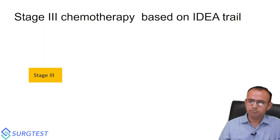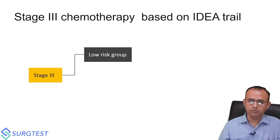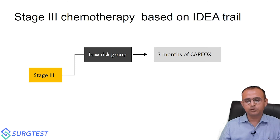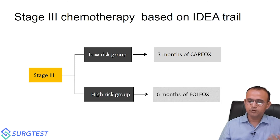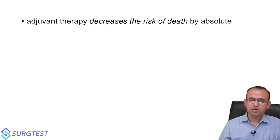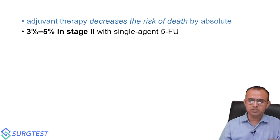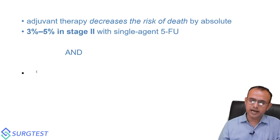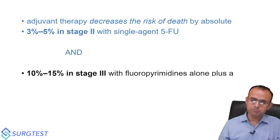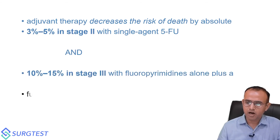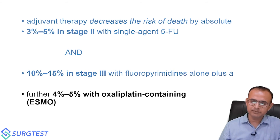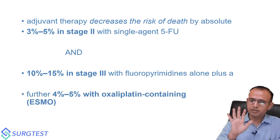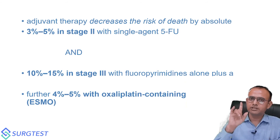Based on the IDEA trial: for stage three low-risk, give three months of CAPOX; for high-risk, give six months of FOLFOX. Adjuvant therapy decreases risk of death by an absolute 3 to 5 percent in stage two with single-agent 5-FU or capecitabine, and by 10 to 15 percent in stage three with fluoropyrimidine alone, plus an additional 4 to 5 percent with oxaliplatin-containing combination.